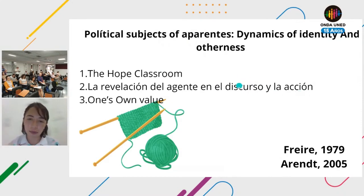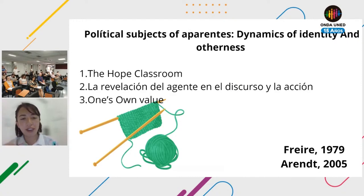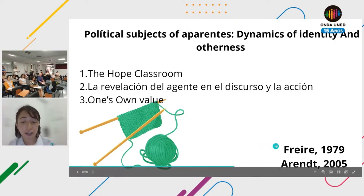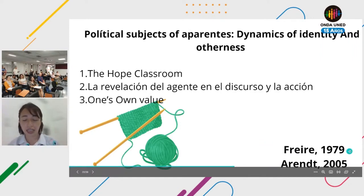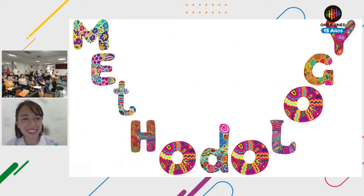Finally, the political subject field tackles how each individual places value on the topic they discuss and how that value is expressed to others — and how that expression helps me understand others' points of view and configure my own way of thinking. I take two authors: Freire and Anna Harind from 2005, and Freire from 1979 and the classroom of hope.